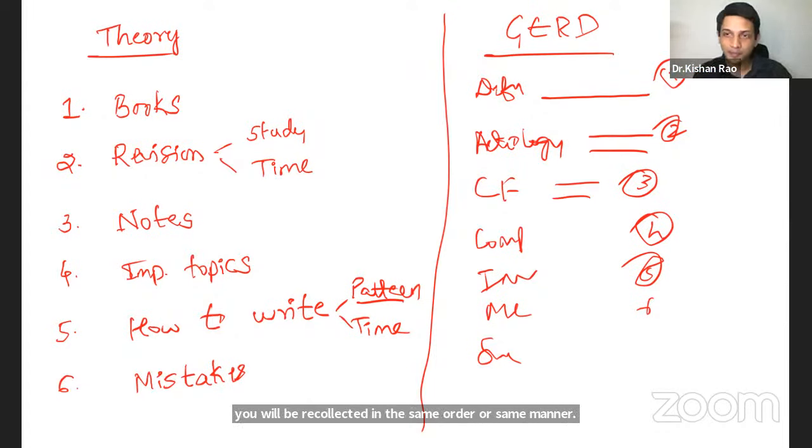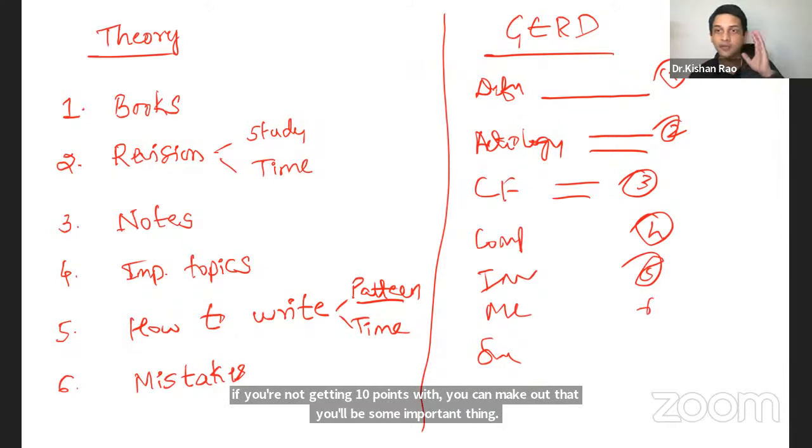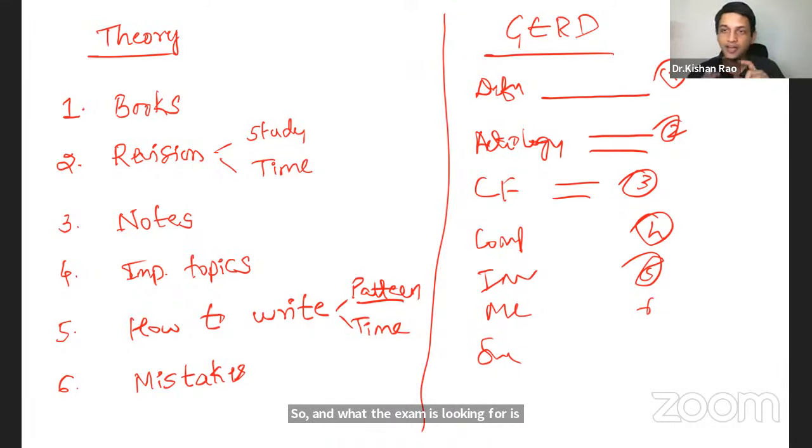So, first point was definition. Second was etiology. So, in that way itself, if you are missing out something, if you're not getting 10 points, means you can make out that you have missed some important thing. And, what the examiner is looking for is those keywords only. And keywords right at the beginning. And then you can frame your sentences of your own. Nobody have to teach that to you. How to make sentences or how to elaborate it.